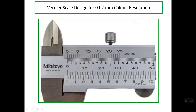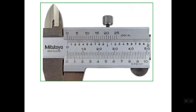Good evening. I'll talk about Vernier scale design for a 0.02 mm resolution caliper. We need to understand how this least count value comes about and what the relation is between this value and the design of the Vernier scale — specifically its length and number of divisions.